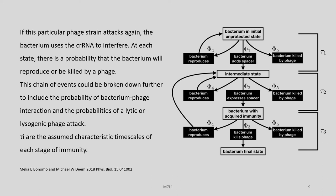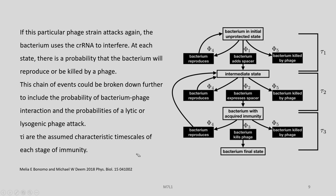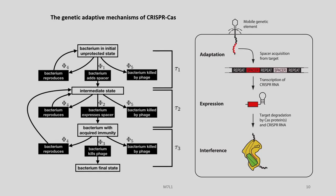If this particular phage strain attacks again, the bacterium uses crRNA to interfere — at which point there is a probability that the bacterium will reproduce or be killed by a phage. The same events could be broken down further to include the probability of bacterium-phage interaction and the probability of a lytic or lysogenic phage attack. Tau i are the assumed characteristic time scales of each stage of immunity — tau 1, tau 2, and tau 3 — which we are going to use in future discussions.